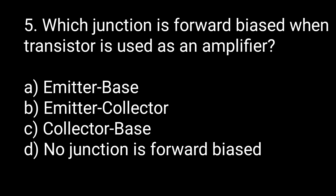Question five: which junction is forward biased when the transistor is used as an amplifier? There are two junctions: emitter-base and collector-base. When the transistor is used as an amplifier, the emitter-base junction is in forward bias. So option A — emitter-base — is the correct answer.